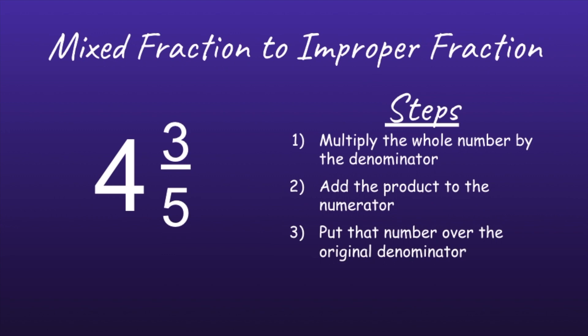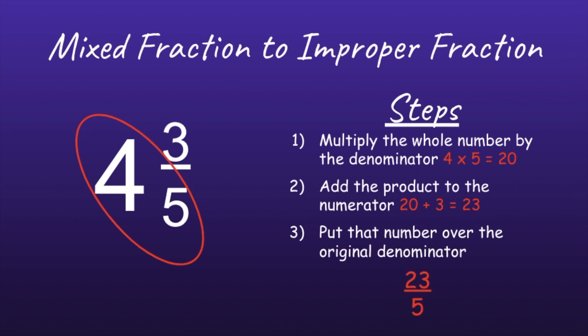So let's do one more. We want to convert 4 and 3 fifths to an improper fraction. The first step is to multiply the whole number by the denominator: 4 times 5 equals 20. The second step is to add the product to the numerator: 20 plus 3 is equal to 23. And the final step is to put that number over the original denominator: 23 over 5 would be the improper fraction from the mixed fraction 4 and 3 fifths.